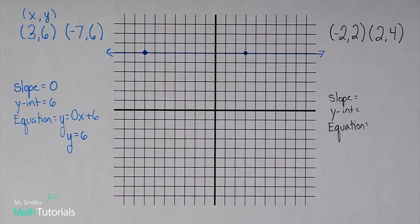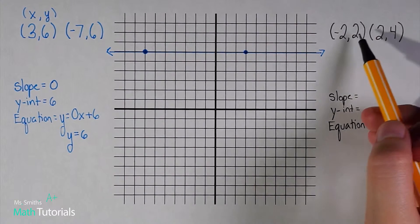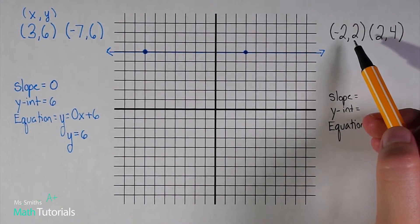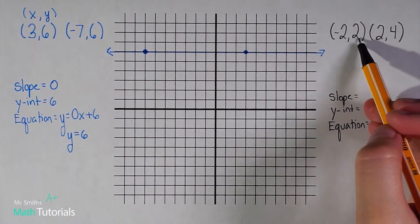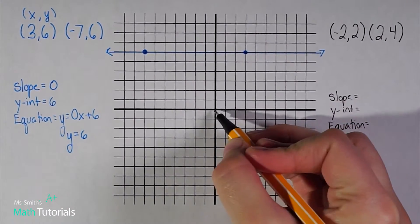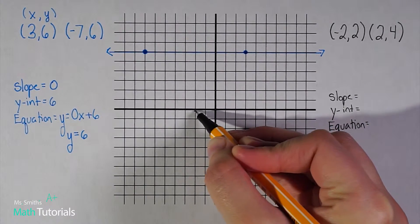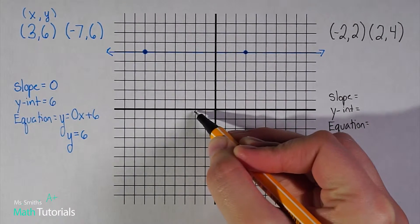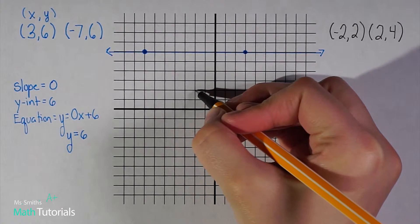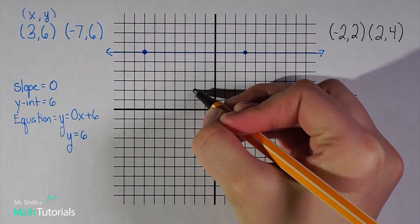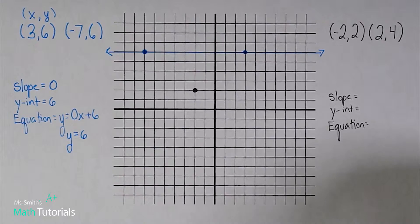Let's come over to our black line. This one's going to look more like what you'll typically see. We've got a couple new points to plot: negative two, positive two. I'm going to start at my origin, move over one, two, and then up one, two. There's my first point.